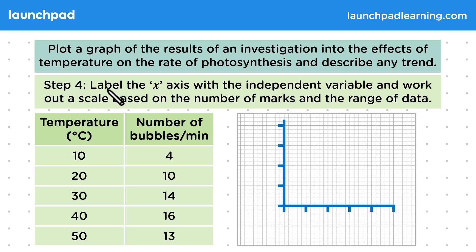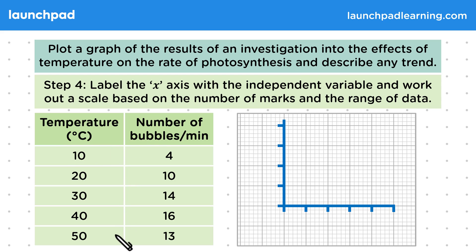Step four: label the x-axis with the independent variable and work out a scale based on the number of marks and the range of data. Remember that the independent variable is temperature, and the range goes from 10 to 50, going up by 10 each time. Therefore, a suitable scale would look something like this. Don't forget to label your axes with the units as well.